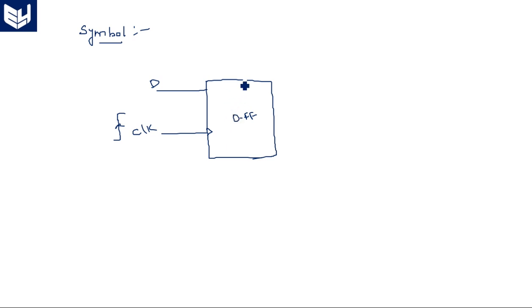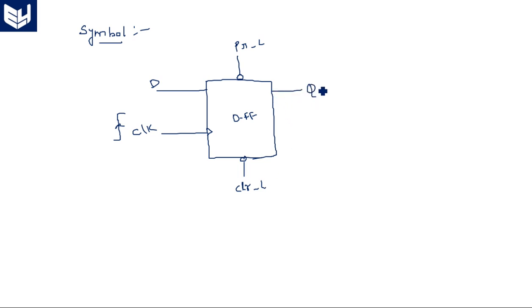Along with these two inputs we also have preset and clear inputs. Preset is active low, and clear is also active low. The outputs are Q and Q-bar. For any flip-flop, the output is always two: Q and Q-bar — one in true form and the other in complement form.